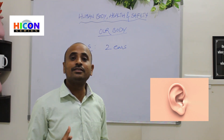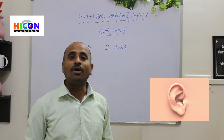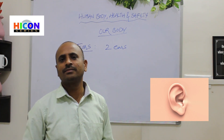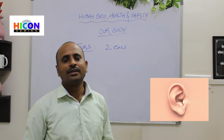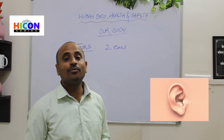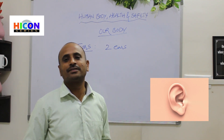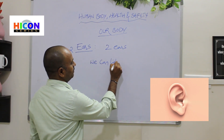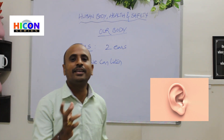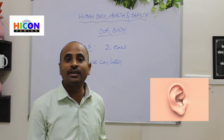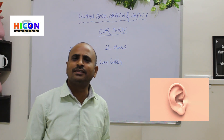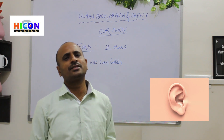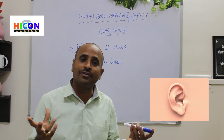Now let us discuss what is the function of our ears. What work can be performed by our ears? What can we do with our ears? We can listen. Ears are used for listening. What can we listen? We can listen to various types of sounds — sounds of vehicles, sounds made by different birds around us, sounds made by children in the classroom, and the sound made by the school bell.